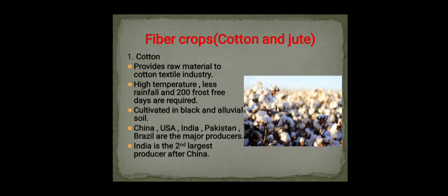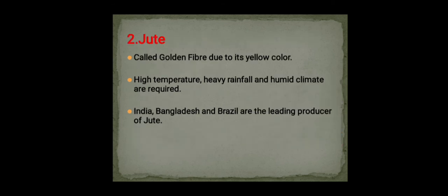Fiber crops are cotton and jute. Cotton provides raw material to the cotton textile industry. High temperature, less rainfall, and 200 frost-free days are required to grow cotton. It is cultivated in black and alluvial soil. China, USA, India, Pakistan, and Brazil are major producers; India is the second largest producer of cotton after China.